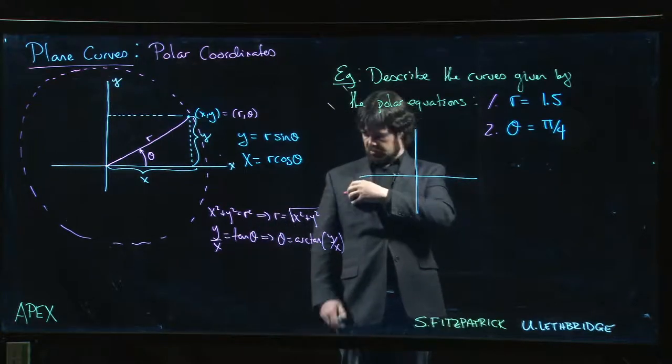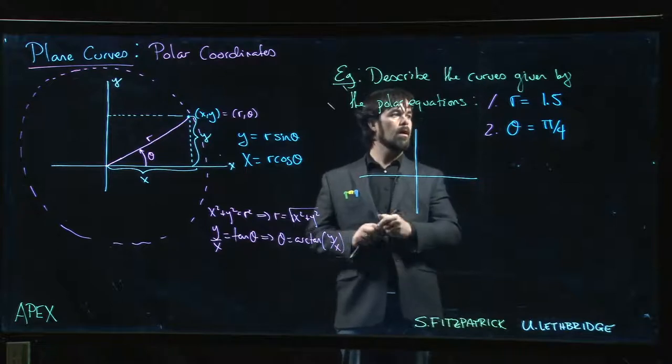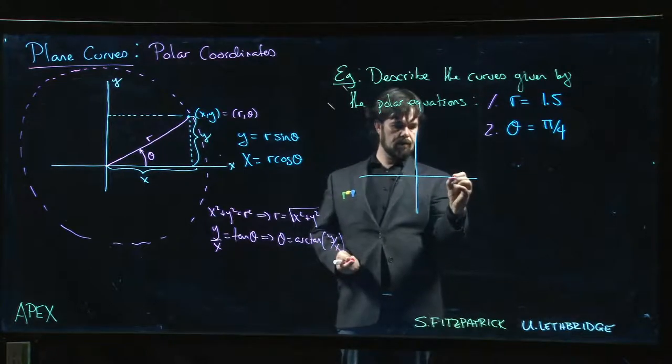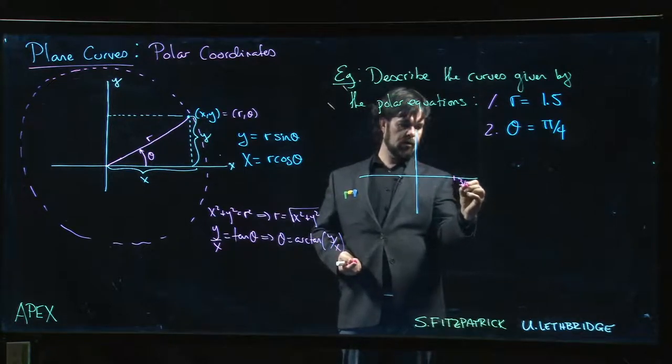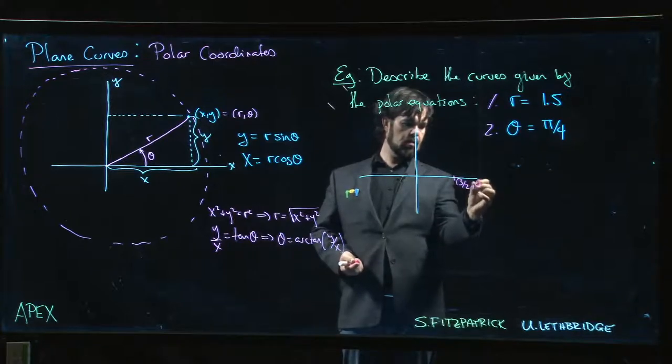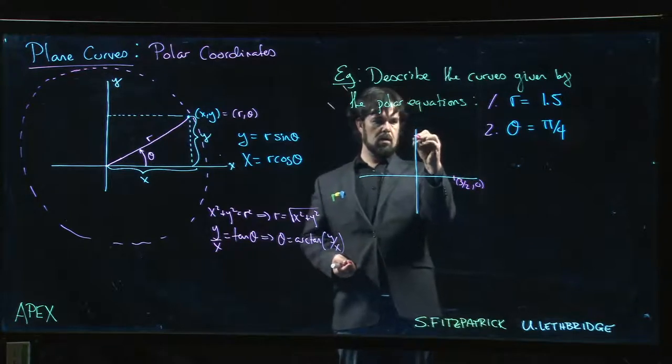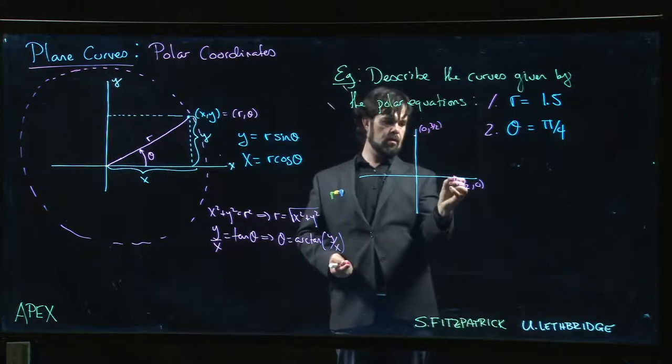So R = 1.5 or 3/2. Here's 3/2, 0. Up here's 0, 3/2. We plot our circle.